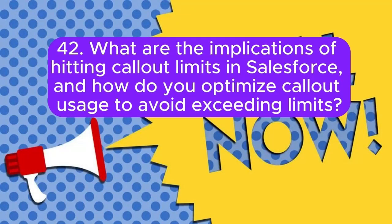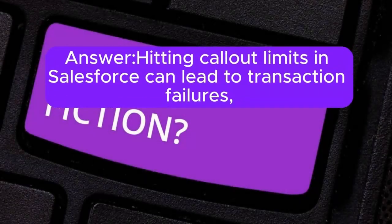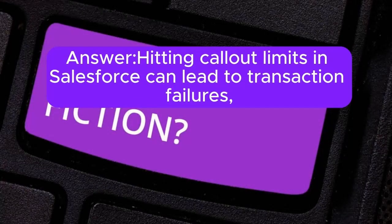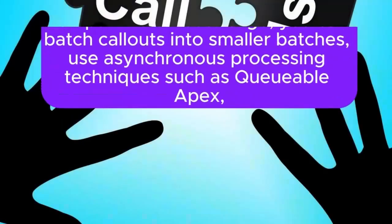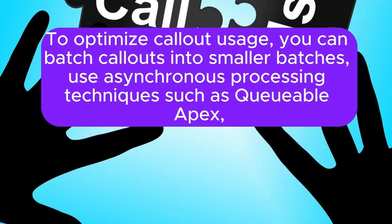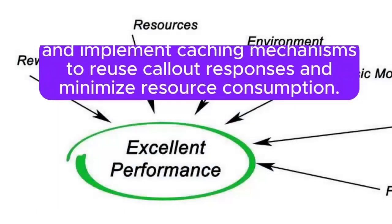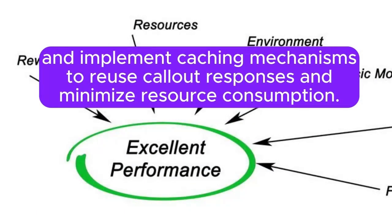Question 42: What are the implications of hitting callout limits in Salesforce, and how do you optimize callout usage to avoid exceeding limits? Answer: Hitting callout limits in Salesforce can lead to transaction failures, delayed integration processes, and potential impact on system integration and functionality. To optimize callout usage, you can batch callouts into smaller batches, use asynchronous processing techniques such as Queueable Apex, and implement caching mechanisms to reuse callout responses and minimize resource consumption.